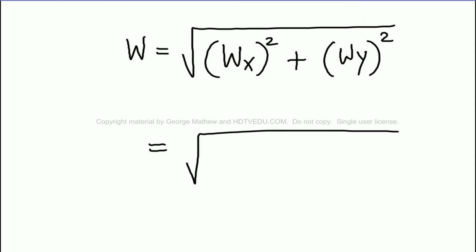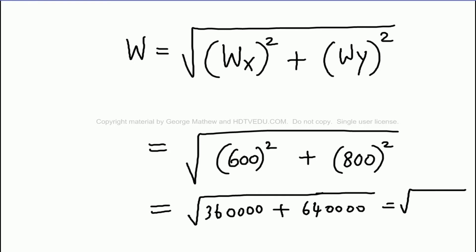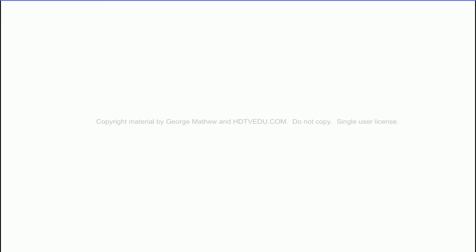Wx is 600 newtons. Wy is 800, so what do we get? Square root of 600 squared plus 800 squared equals square root of 360,000 plus 640,000, which equals square root of 1,000,000, which is 1000. So weight is equal to 1000 newtons.